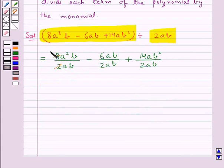Now 2 times 4 is 8. This a cancels with one a in the numerator. This b and b gets cancelled. Then 2 times 3 is 6, a and a gets cancelled, b and b gets cancelled. Then 2 times 7 is 14. This a and a gets cancelled.